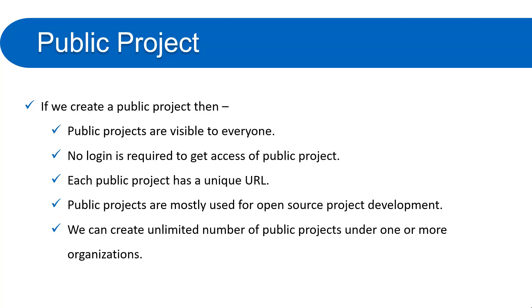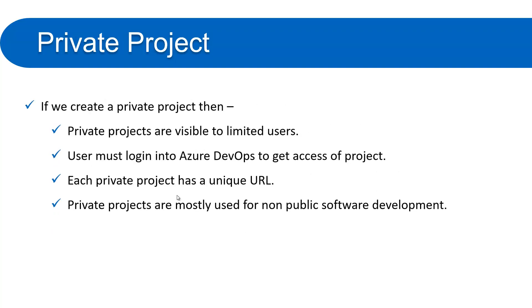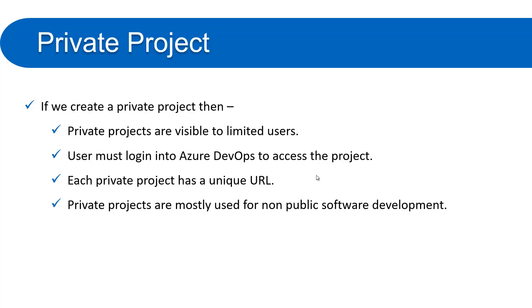Public projects are mostly used for open source project development — something visible to everyone. We can create an unlimited number of public projects under one or more organizations. Private projects are visible to limited users — only those users to whom you provide access. The user must log into the Azure DevOps portal to access a private project, and private projects are mostly used for non-public software development within an organization.